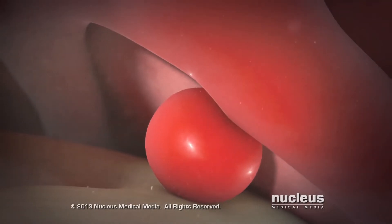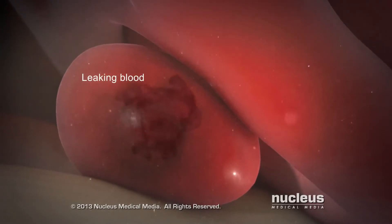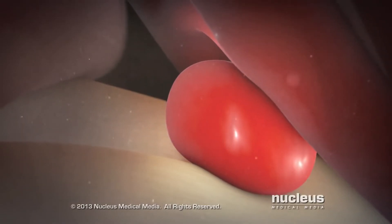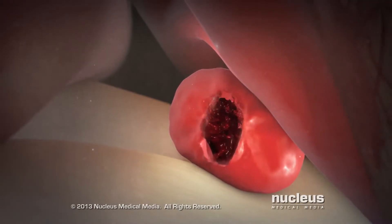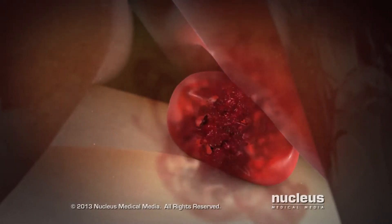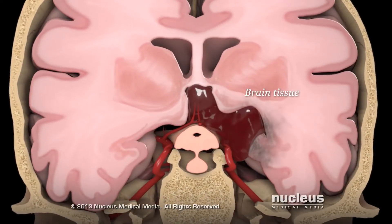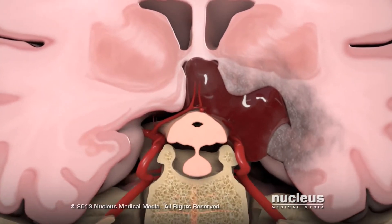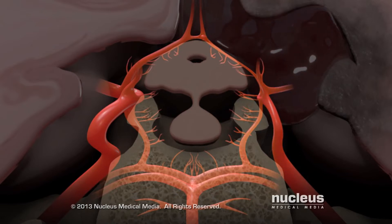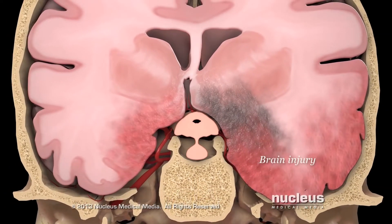Over time, the aneurysm may grow and push on nearby brain tissue or nerves. Blood may also leak from the aneurysm. If its wall gets too thin, the aneurysm can burst or rupture and spill high-pressure blood into the space around your brain. The blood presses on your brain tissue and can cause injury to your brain cells. Chemicals in the escaped blood can irritate other brain arteries and cause them to narrow. As a result, your brain can swell, leading to serious brain injury.